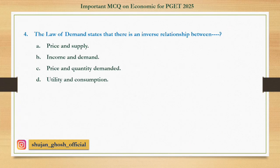Question number four: The law of demand states that there is an inverse relationship between — option A: price and supply; B: income and demand; C: price and quantity demanded; D: utility and consumption. Answer: price and quantity demanded.